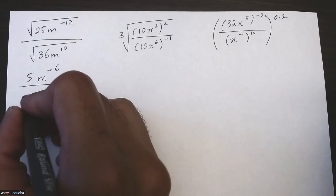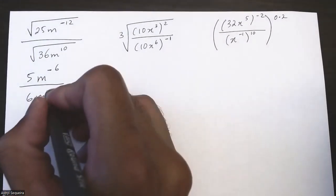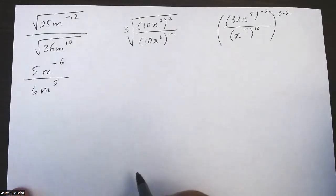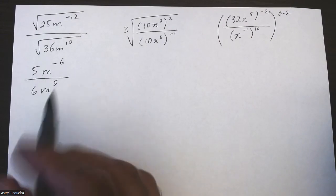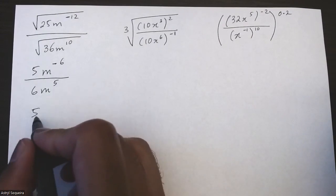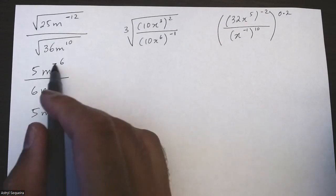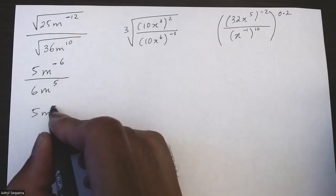You do the same thing on the bottom—it's going to become 6m to the 5. 5 over 6 cannot be simplified. However, I can combine my m terms, so if I combine my m terms, negative 6 minus 5 is negative 11.